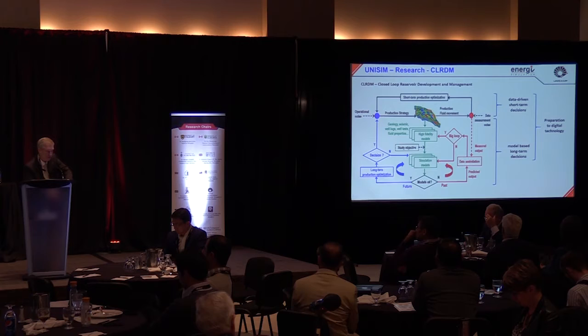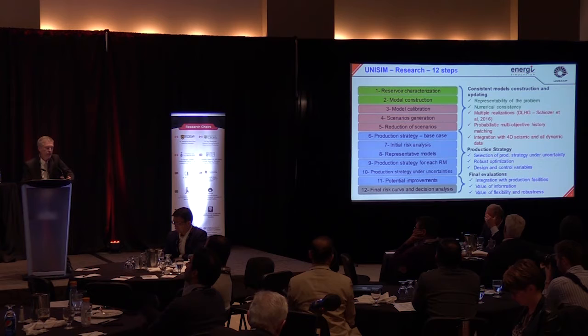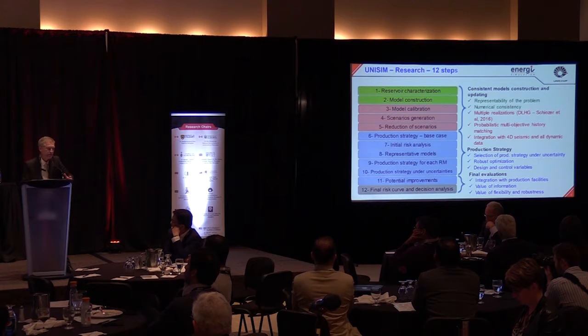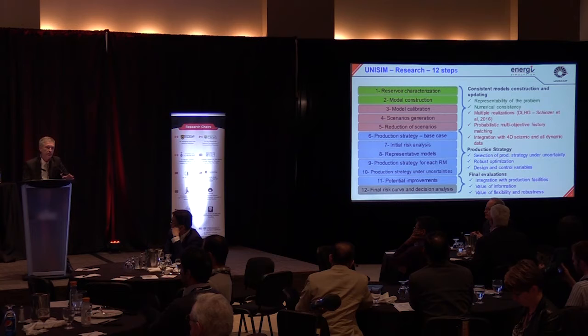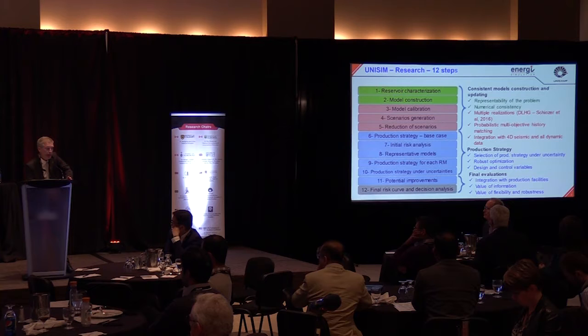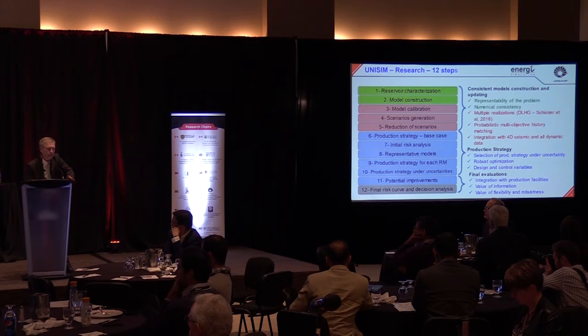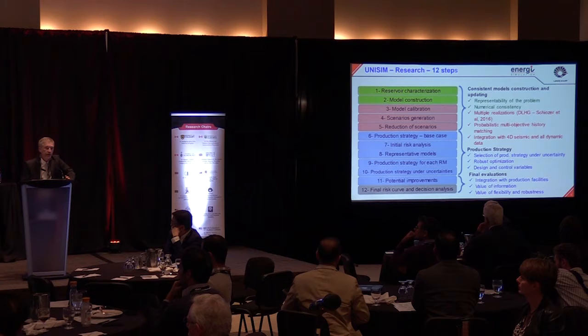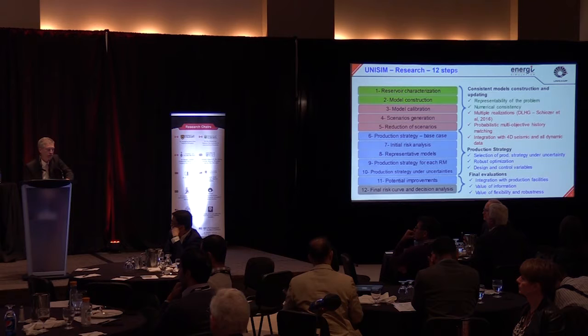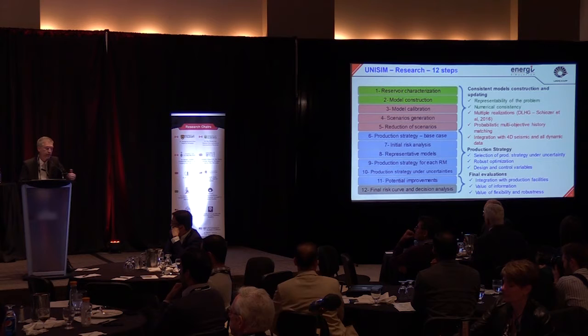There are several ways to implement these closed-loop procedures. We are doing this in our group in 12 steps. We divide these into steps because of the complexity of the process. The green part is dedicated to building the fit-for-purpose models — the models that have the best relationship between computational time and quality of results. The red parts are dedicated to calibrating the models: first manually to remove inconsistencies, and then including all uncertainties to generate scenarios using history-matching procedures.